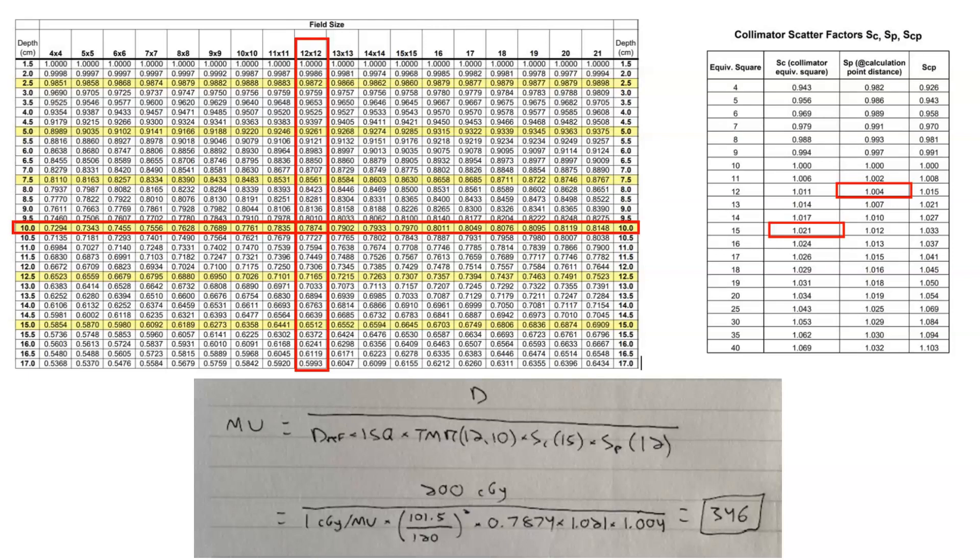And lo and behold, we get the same monitor unit setting of 346 monitor units. But I want to point out here too that the inverse square factor is now from the source to calibration distance to the source to calculation distance. So it's not the SSD plus D max. In this case, it's the SSD plus the depth of calculation, which is different from the PDD formalism.